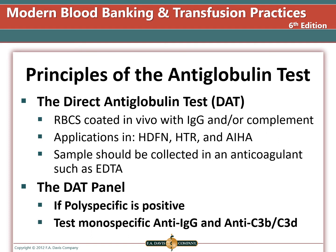The DAT detects in vivo sensitization of red cells with IgG or complement components. Conditions that result in positive results are hemolytic disease of the fetus and newborn, hemolytic transfusion reactions, and autoimmune hemolytic anemia. The sample should be collected in an anticoagulant tube such as EDTA, not a serum tube. For a DAT panel, if you have a 3-5% suspension of red cells and it's positive with polyspecific, then you would perform a test with monospecific anti-IgG and monospecific anti-C3D to determine the specific type of protein sensitizing the cells.